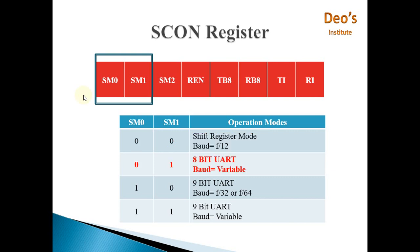Mode 1 is 8-bit UART mode. UART stands for Universal Asynchronous Receiver Transmitter. This mode uses 2 extra bits - a start bit and a stop bit. Data is 8-bit, so SBUFF is sufficient. Along with the 8-bit data, 2 extra bits indicate the start and end of the byte, making 10 bits total transmitted in a single cycle. The baud rate is variable.